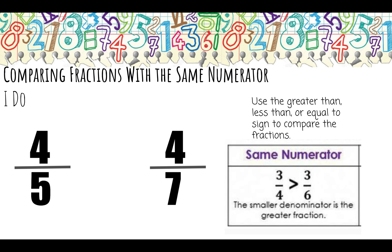Next we have four-fifths and four-sevenths. We both ate four pieces of cake. My cake had five pieces and I ate four — I almost ate the whole cake. Your cake had seven pieces and you ate four, so you still have three pieces left. Four-fifths is larger than four-sevenths.